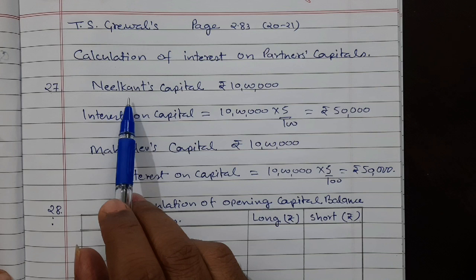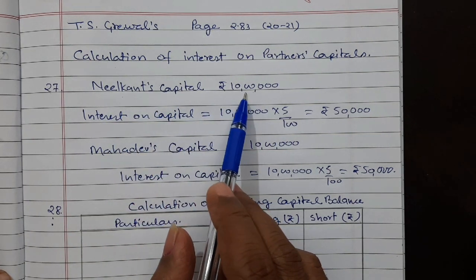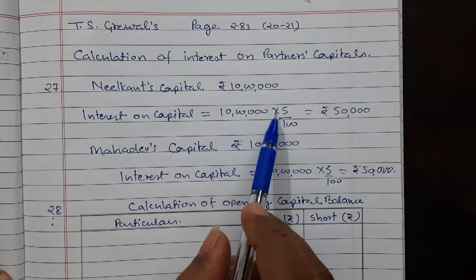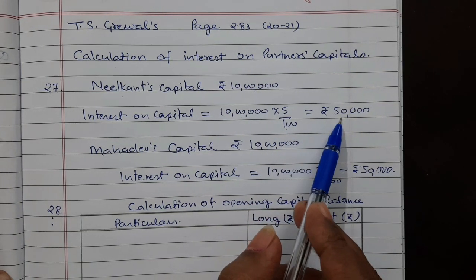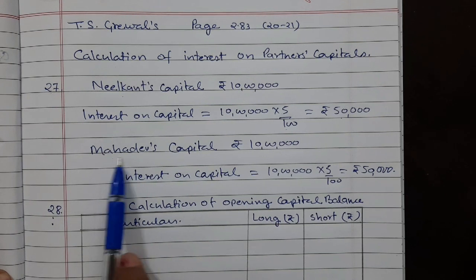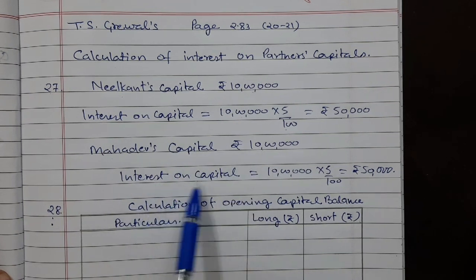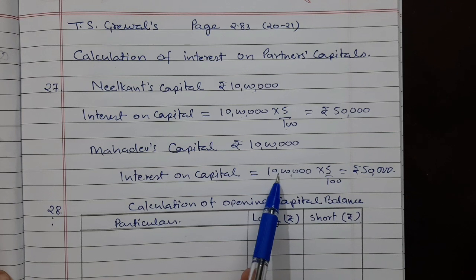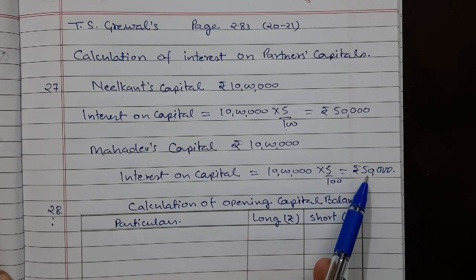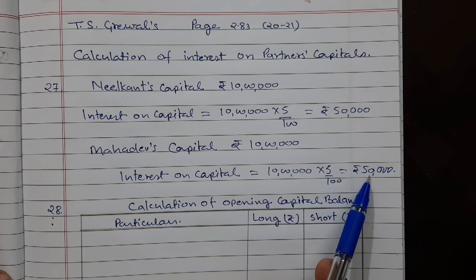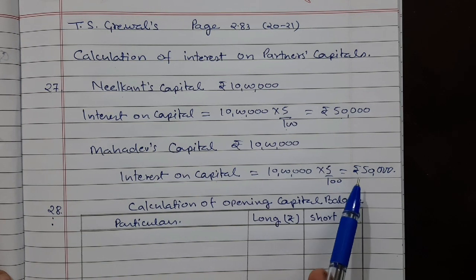The question asks to calculate interest on capital at the rate of 5% for the year ended 31st March 2020. It is a direct, simple calculation. Neil Kant's capital is rupees 10 lakh; 5% interest on capital is rupees 50,000. Similarly, Mahadev's capital is also rupees 10 lakh, and interest on capital is 10 lakh multiplied by 5%, which is also rupees 50,000. That was a very simple question. Now we move to question number 28.